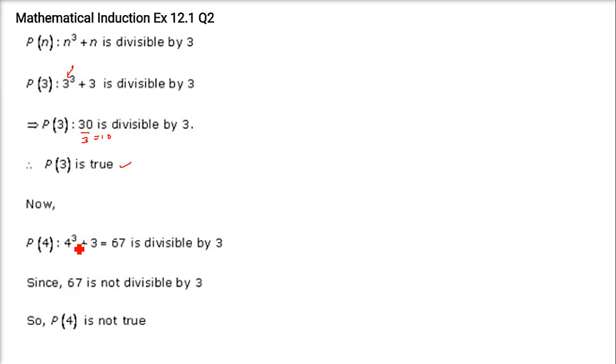Now coming to 4, put 4 here. So 4 cubed, that is 64. 64 plus 3 is 67. Now 67 is not divisible by 3, so P(4) is untrue, not true.